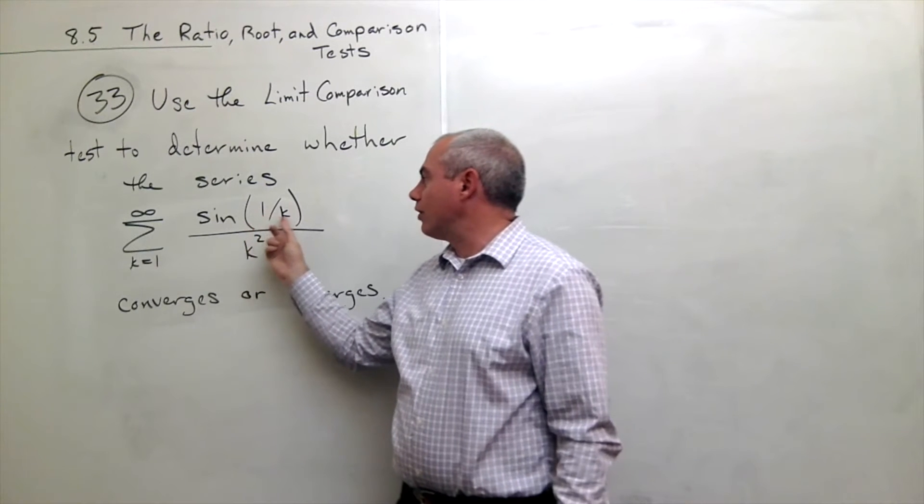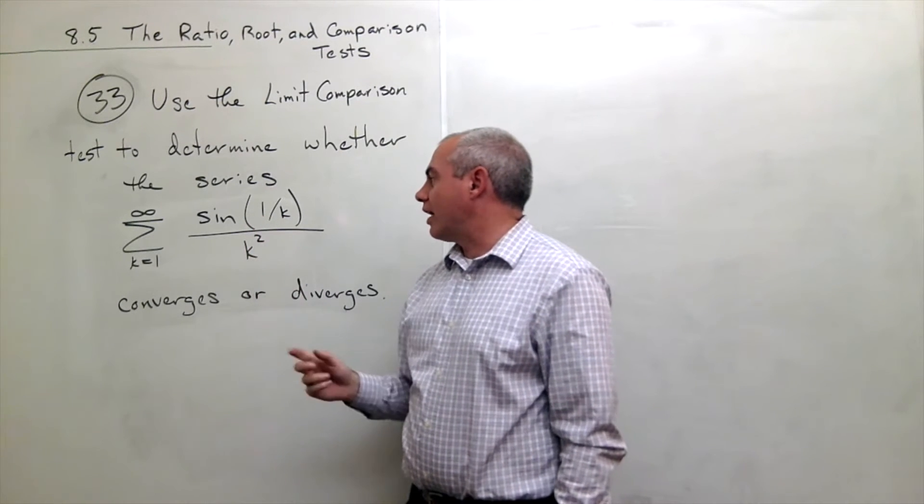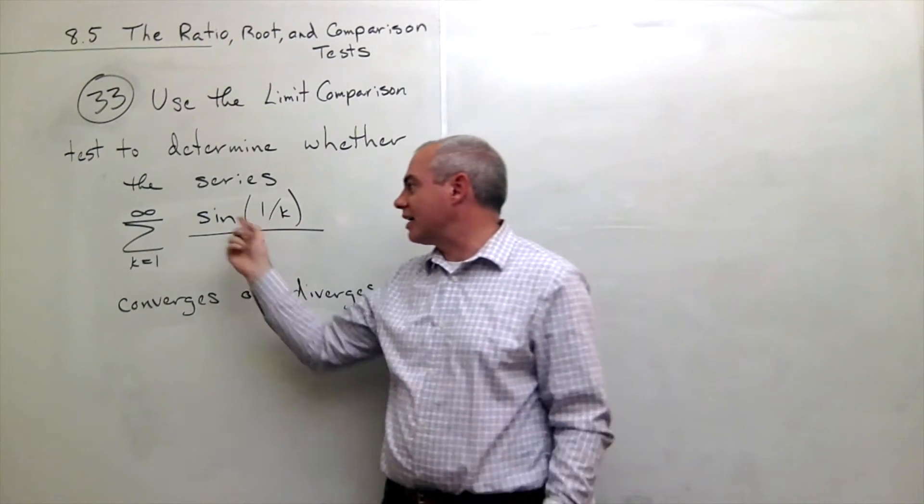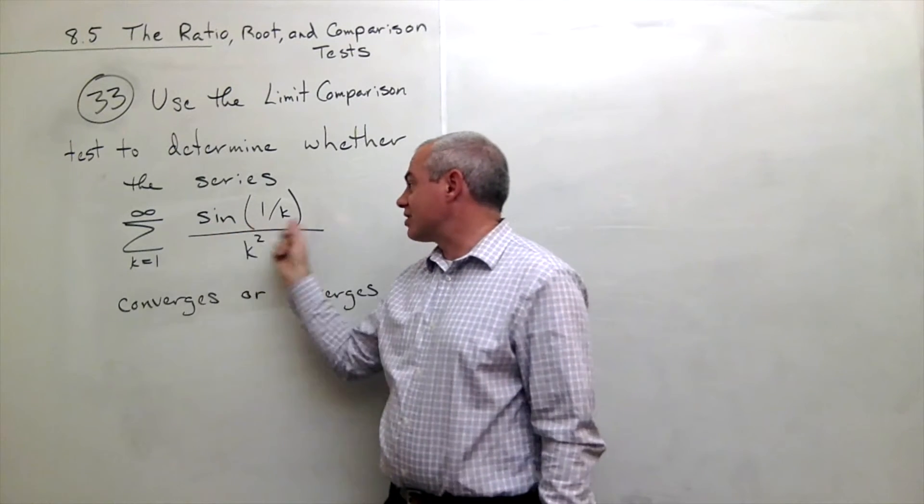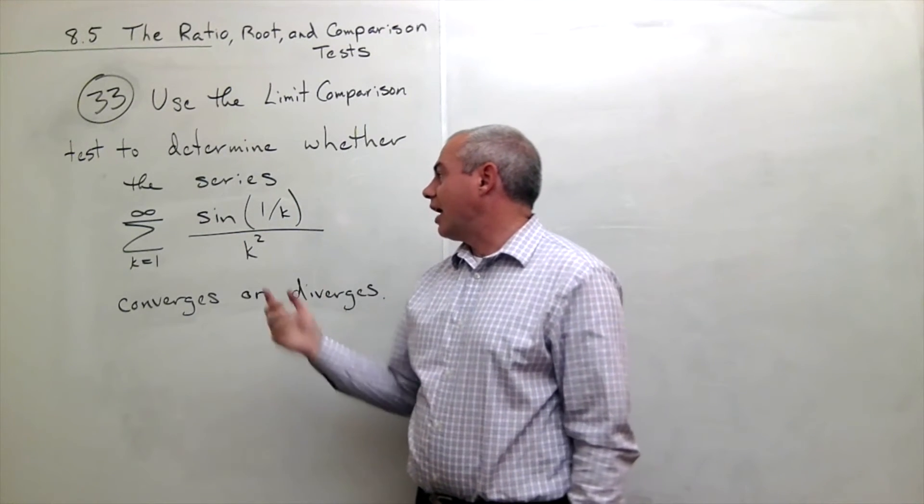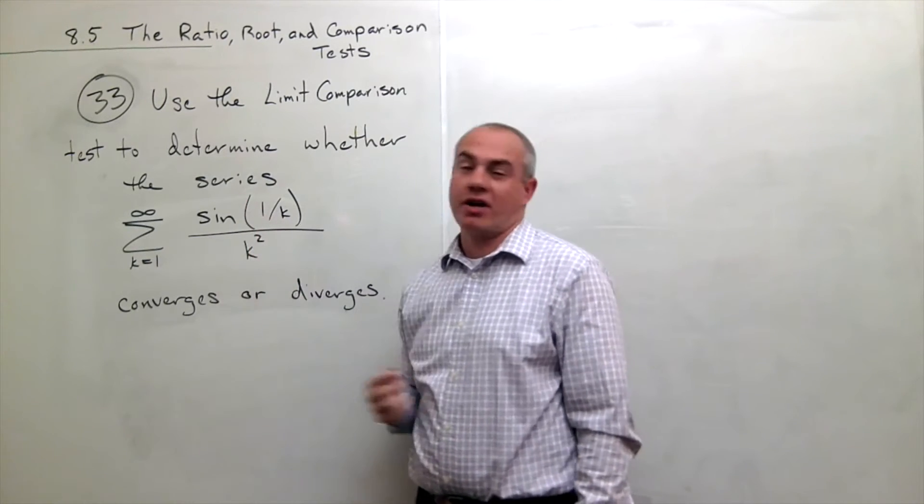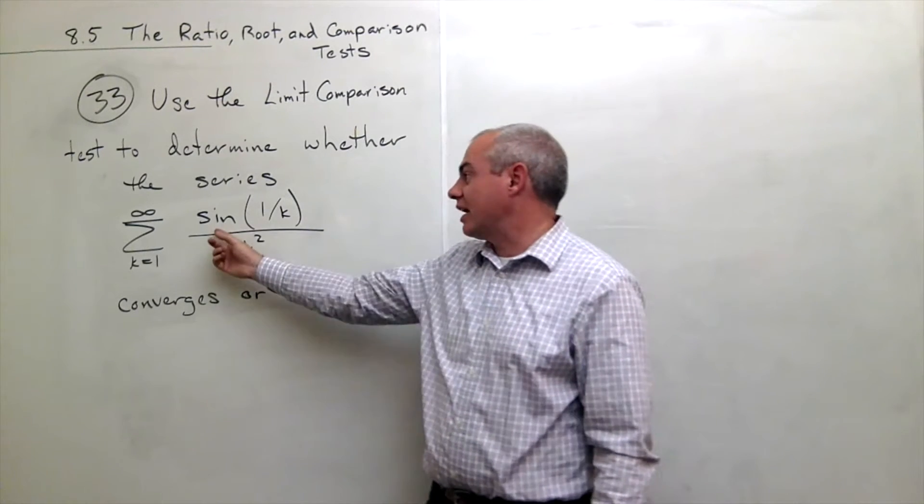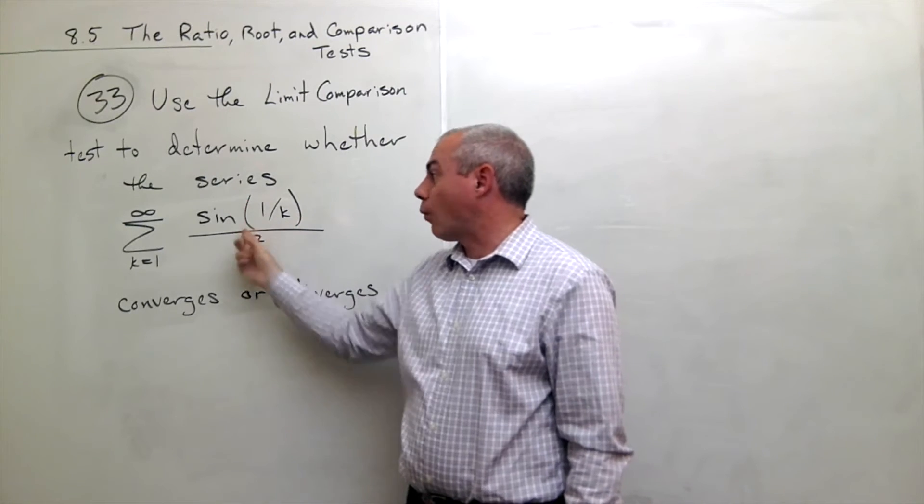In this case, I've got sine of 1 over k over k squared. Well this sine of 1 over k, as k gets big, this thing's pretty small. And since this thing is so small, I think it's going to just be kind of like having a 1 over k squared. Is it really going to make that big of a difference that I have a sine of 1 over k instead of just a 1 here?